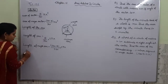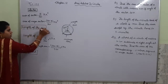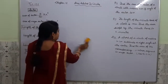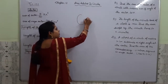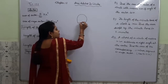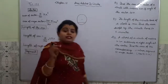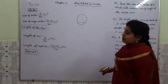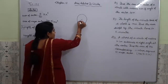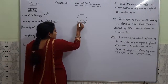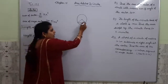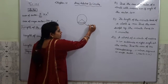Now we will study about segment. What do you mean by segment? In simple terms, segment is a part of something. In the case of a circle, segment is the area occupied between the arc and the chord of the circle. Let this chord be AB and this arc be AB.